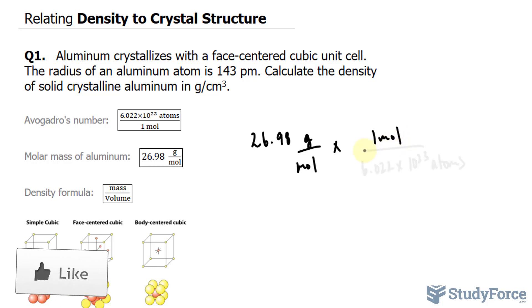That way the units cancel out. So notice that this mole unit and this mole unit cancel out and we're left with grams per atoms.